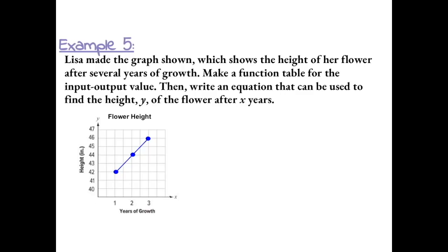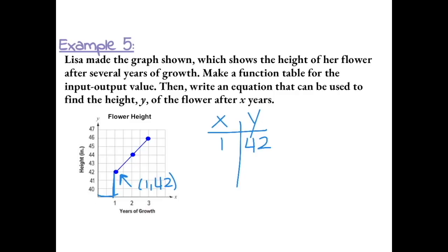Example 5. Lisa made the graph shown, which shows the height of her flower after several years of growth. Make a function table for the input-output values, then write an equation to find the height y of the flower after x years. Our x values represent our input and y represents our output. The first ordered pair is (1, 42), the next is (2, 44), and the last is (3, 46).